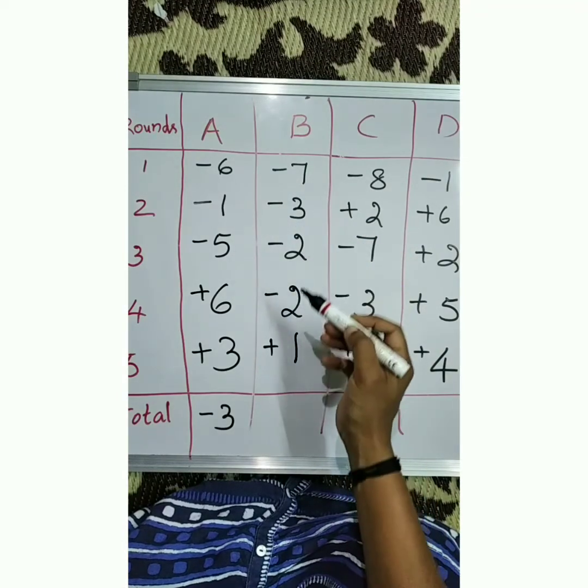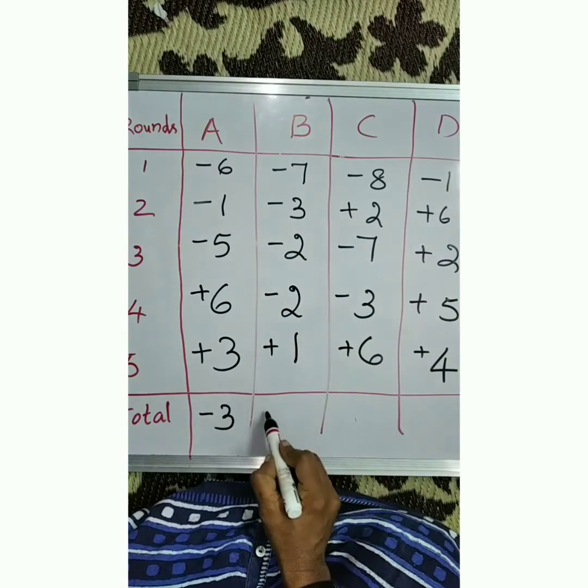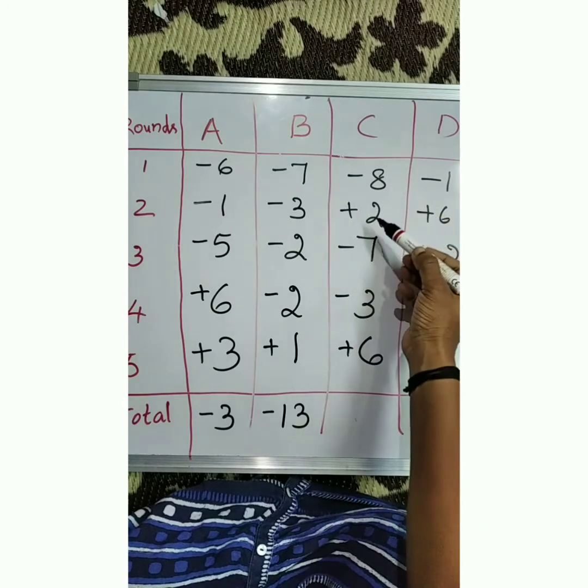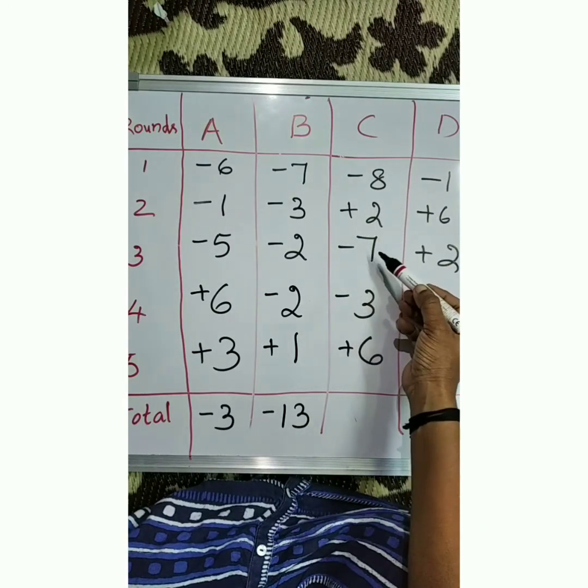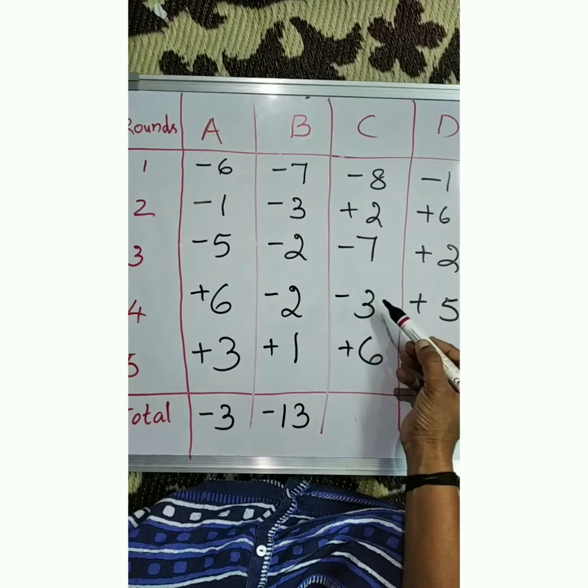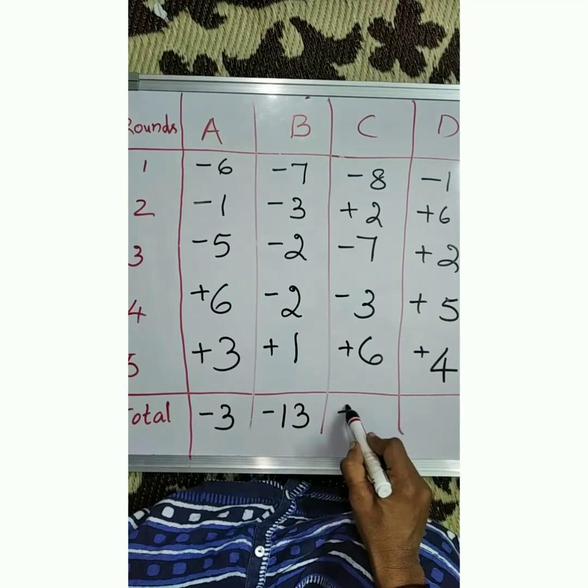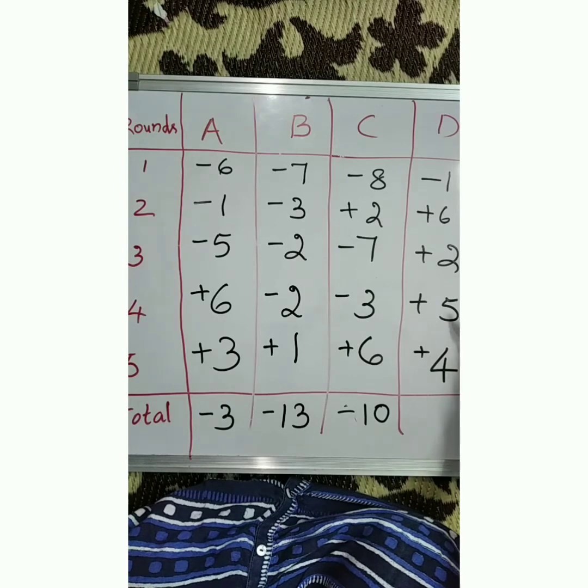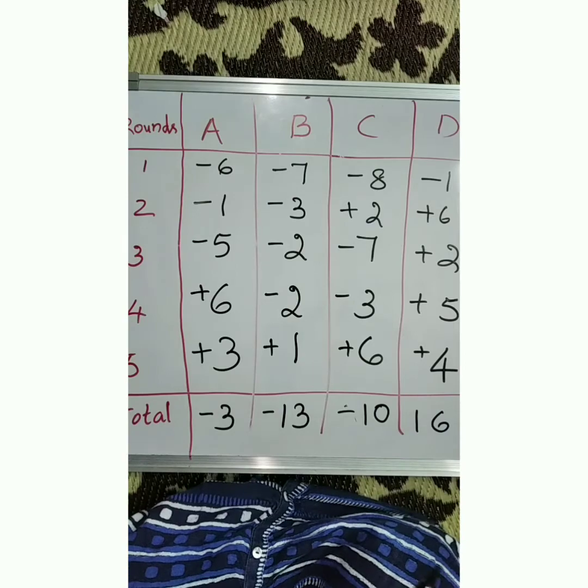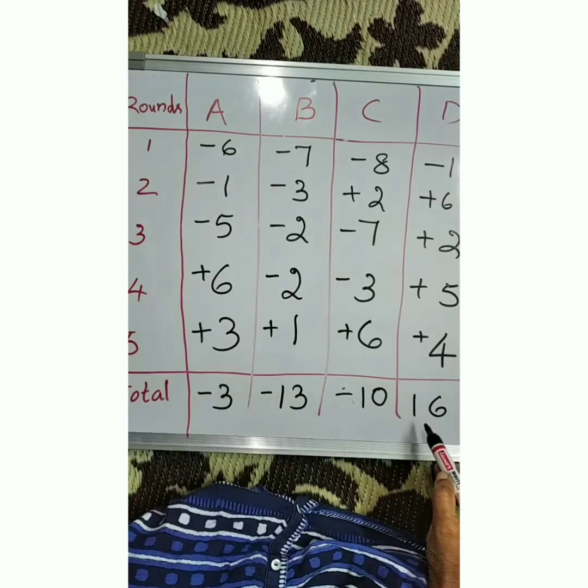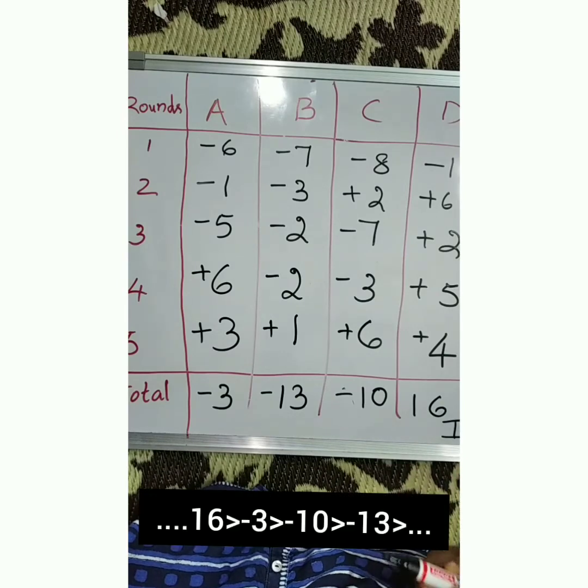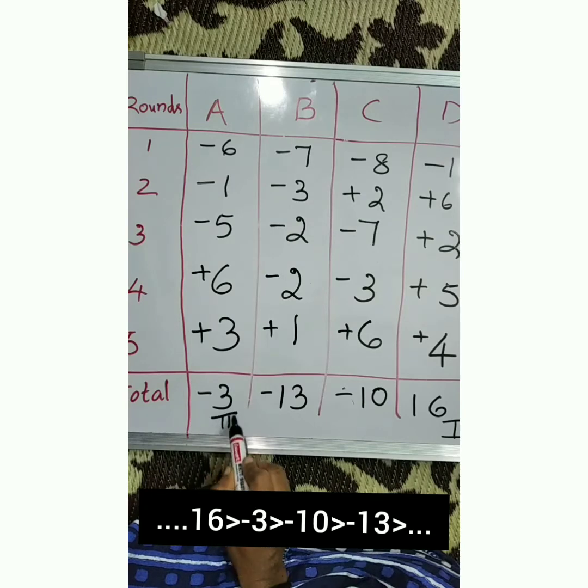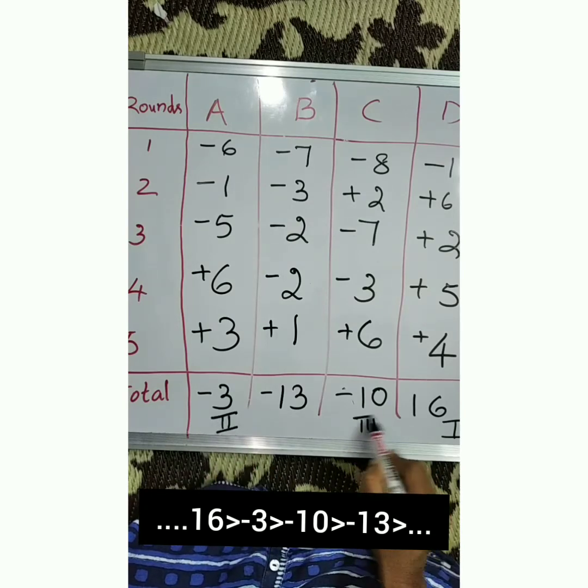Minus 10 minus 2, minus 12. Minus 12 minus 2, minus 14, plus 1, minus 13. Minus 8 plus 2, minus 6. Minus 6 minus 7, minus 13. Minus 13 minus 3, minus 16. Minus 16 plus 6, minus 10. Minus 1 plus 6 plus 5, plus 5 plus 2 plus 7, plus 7 plus 5 plus 12, plus 12 plus 4, 16. Who is the winner? Yes, positive number, only one positive number. He is the first and second is minus 3, third minus 10 and fourth minus 13. Who is the winner? D.